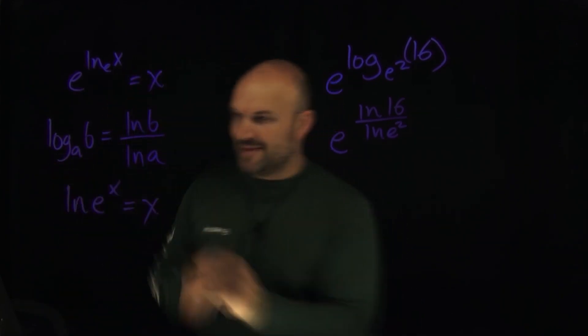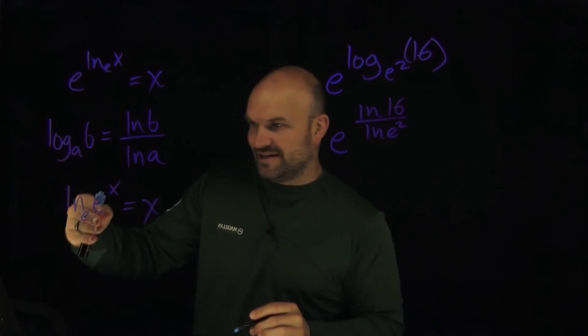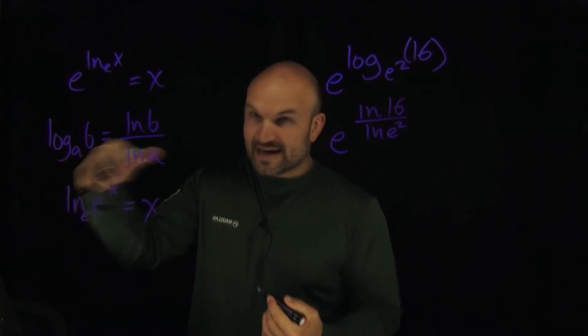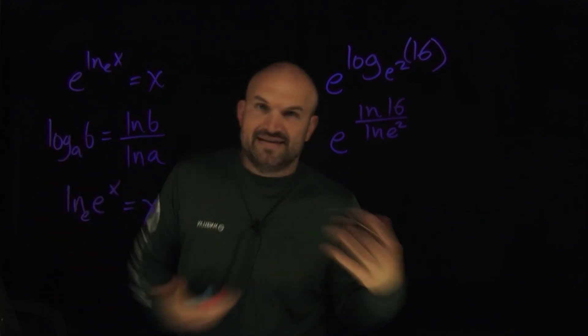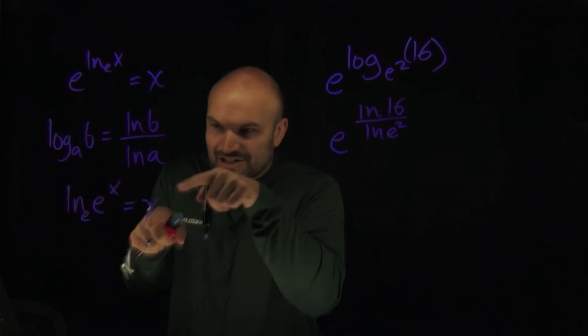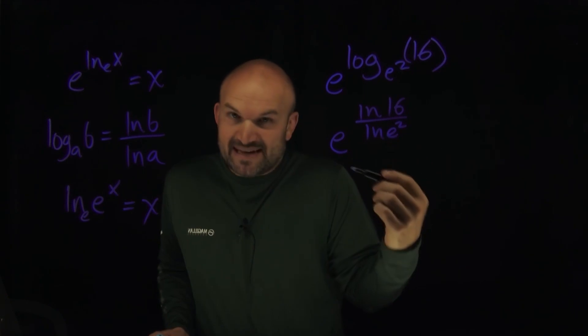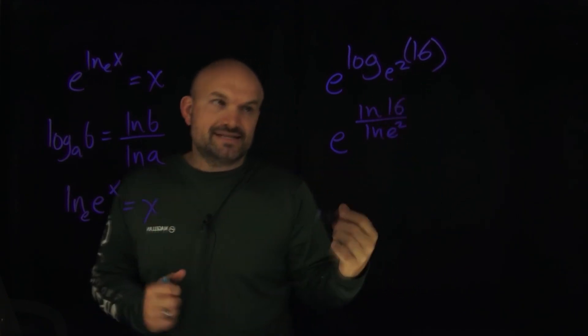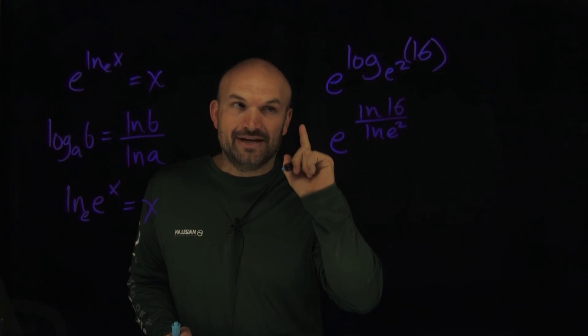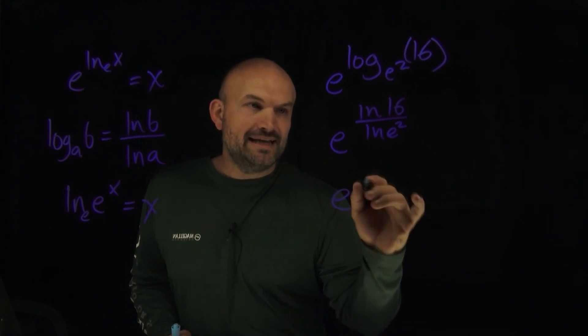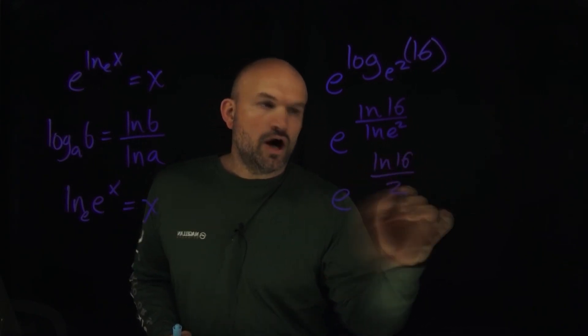Now you can immediately see that I have ln of 16, as well as ln base e of e, which brings up another rule that we can use with our natural logarithms. Remember, when the natural logarithm has a base e, so if I have ln of e raised to some power, it doesn't matter if the power is 5, 10, 11, I'm just using x, it's just going to equal x. So I have ln of e squared. So that's just going to equal a 2. So now I have e raised to the ln of 16 all over 2.